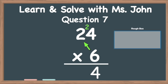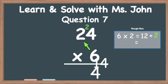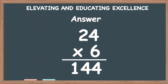Now we're going to multiply six times two in the rough box. Six times two equals twelve. Now we're going to add the number that we carried — the two — bringing it down to the rough box and adding it with the twelve. So twelve plus two equals fourteen. We have no more multiplying to do, so even though this is a two-digit number, we bring that 14 down to the answer section. So the answer is 144.